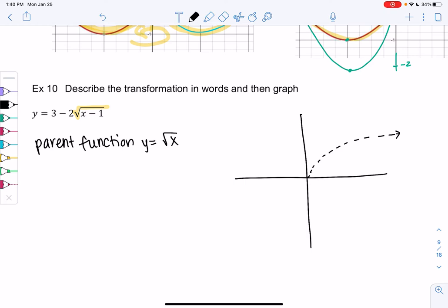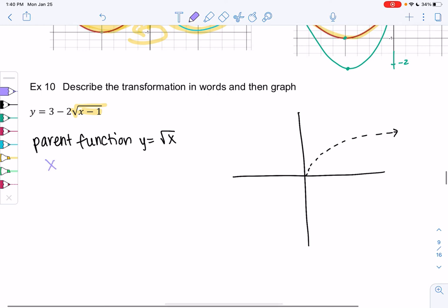All right. And then we kind of work from the inside out. So I'm going to start on the inside. So x minus 1, we have a horizontal shift. It means we shift to the right by 1. So that's how I'm describing the transformation in words. And so when we shift to the right by 1, we'll just go over 1. And so now we have the same curve, just over to the right by 1.